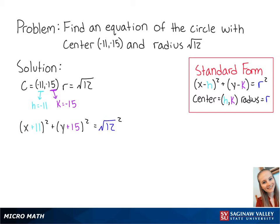This can be simplified as (x + 11)² + (y + 15)² = 12, and this is the final answer.